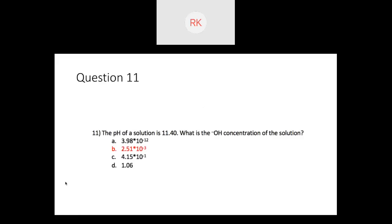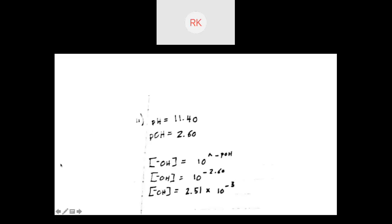Question eleven: if the pH of the solution is 11.4, what is the hydroxide concentration? Using pH + pOH = 14, we find pOH = 2.6. Since pOH = –log[OH⁻], we get [OH⁻] = 10^(–2.6), which comes out to 2.51 × 10⁻³ M.